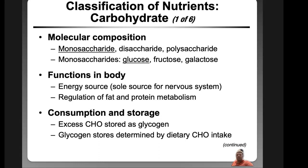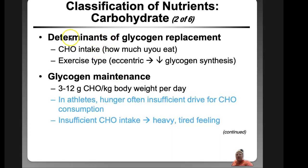The brain and spinal cord are surrounded by glucose. We can actually test a person's blood with a glucometer to tell if they have a skull fracture — if blood glucose is higher than normal, it may indicate a fracture inside the skull leaking into the body. Determinants of glycogen replacement include carbohydrate intake, exercise type — eccentric exercises create more glycogen synthesis.